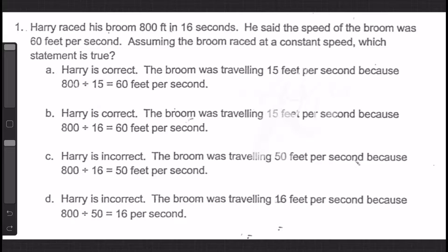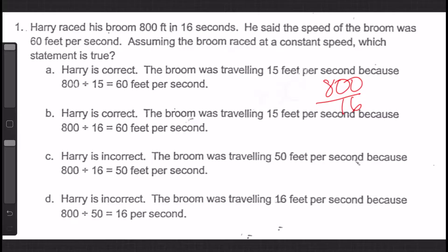Let's look at question number one. Harry raced his broom 800 feet in 16 seconds. He said the speed of the broom was 60 feet per second. Assuming the broom raced at a constant speed, which statement is true? Before we can figure any of this out, we need to know what our ratio is. According to this problem, Harry raced his broom 800 feet in 16 seconds. We need to figure out how many feet per second he was traveling. We have feet on top and seconds on the bottom, and we need to make one of these numbers a one to get the unit ratio.